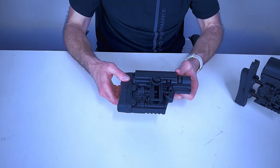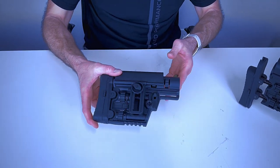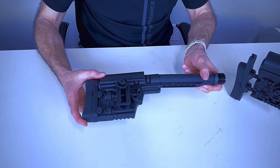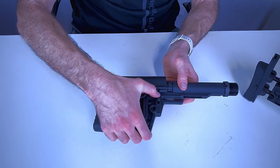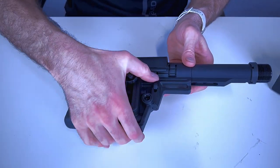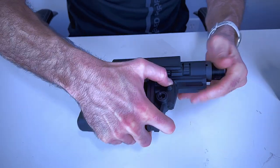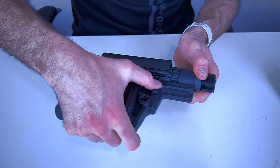So here we have our modular precision buttstock. This is a mil spec tube size, so to install this onto your buffer tube you push this right here all the way down and you can install it once it's on.